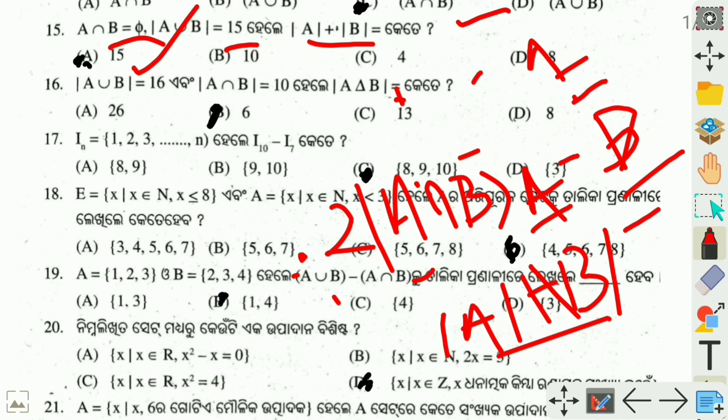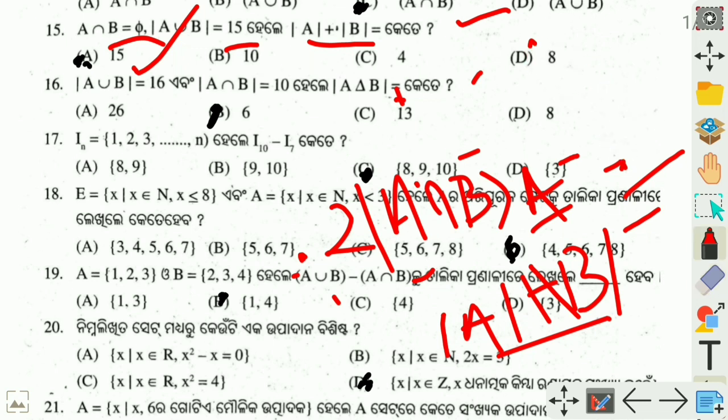4 plus 10 is 26, which is the total count, 26. Now, 2 times A intersection B, which is 10. So 26 minus 2 times 10 is 26 minus 20, which is equal to 6. That is our answer.